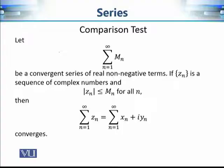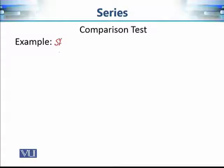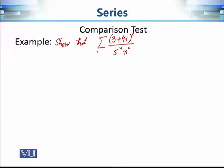Now let's apply this criterion to check the convergence or divergence of a given complex series. Show that the series with terms (3 + 4i)ⁿ / (5ⁿ · n²), for n = 1 to infinity, converges. We want to apply the comparison test in this case.